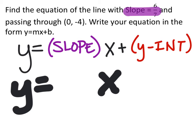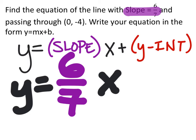Which it gave to us right here. Slope is 6/7. So in this space, the coefficient of x, I'm going to replace with 6/7, just like it told us up there.